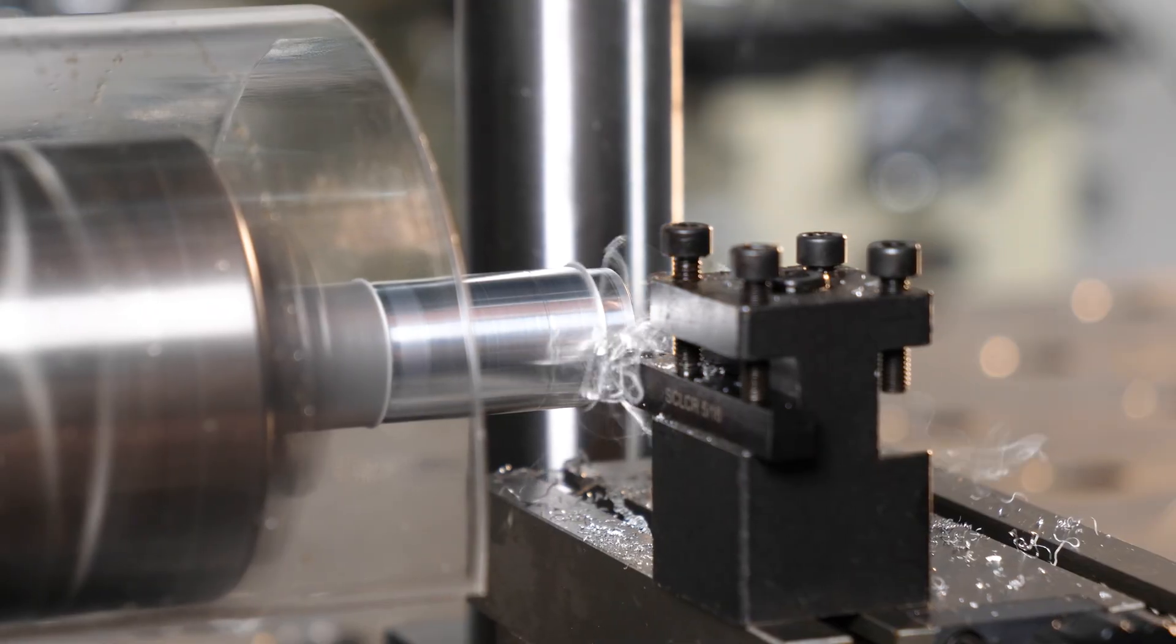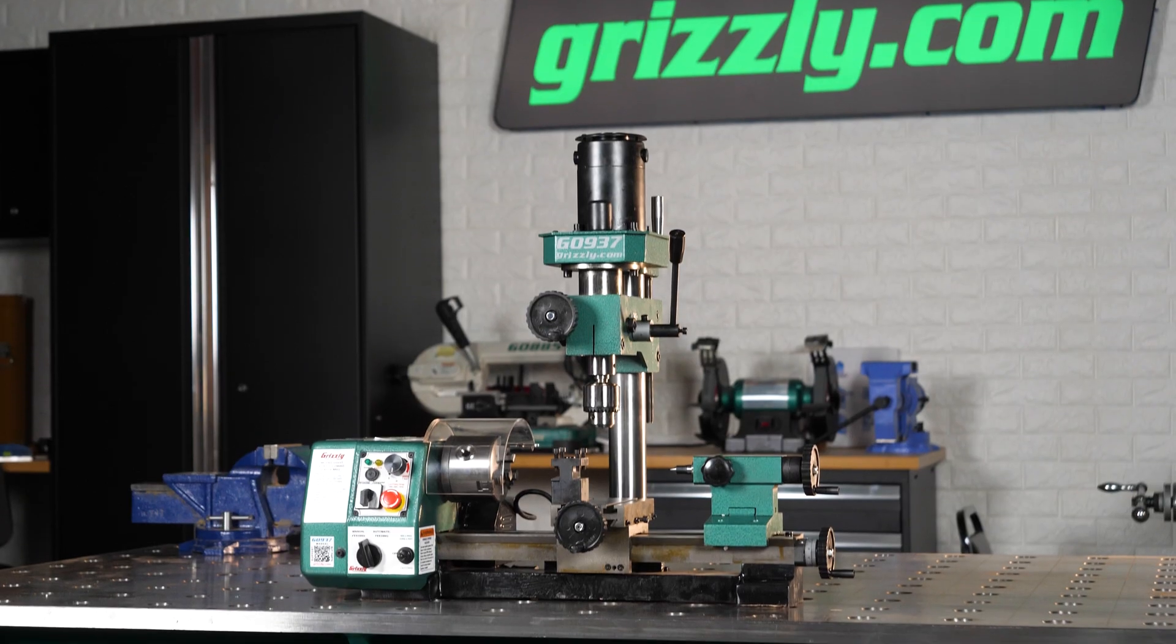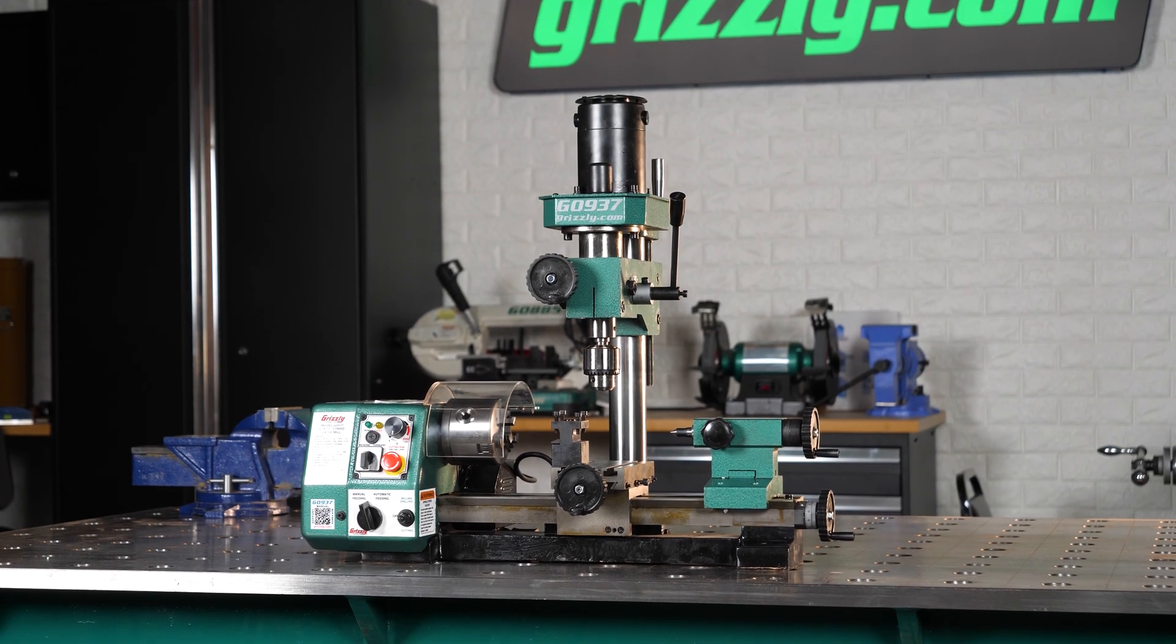Elevate your projects and unlock new possibilities in your workshop with the Grizzly G0937 Combo Lathe and Mill. Visit grizzly.com to learn more and to get yours today.